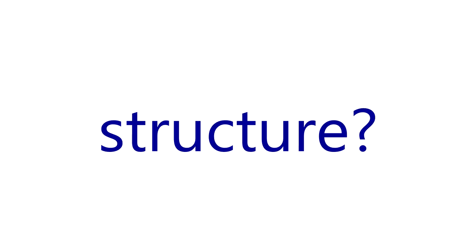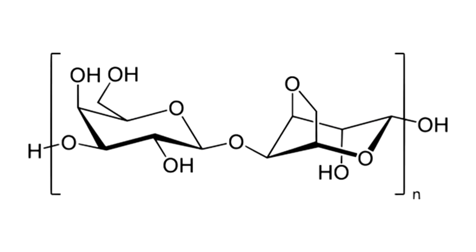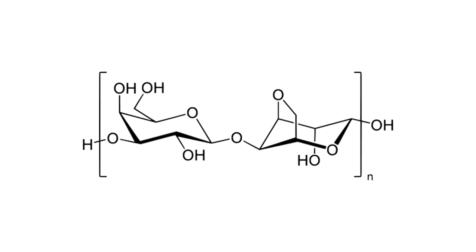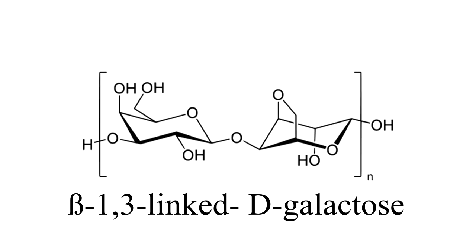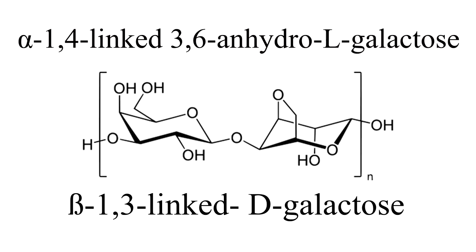The structure of one repeating unit of agar is shown here. Agarose, the gelling portion of agar, is a neutral linear polymer made up of repeating alternate units of beta-1,3-D galactose and alpha-1,4-3,6-anhydro-L galactose, which appear to have a double helical structure.